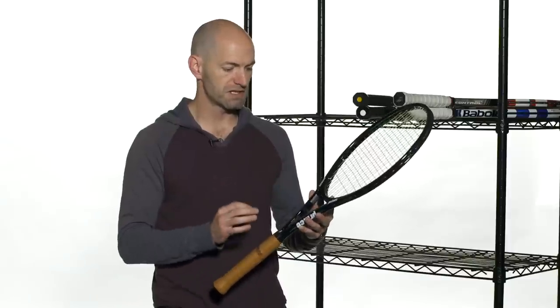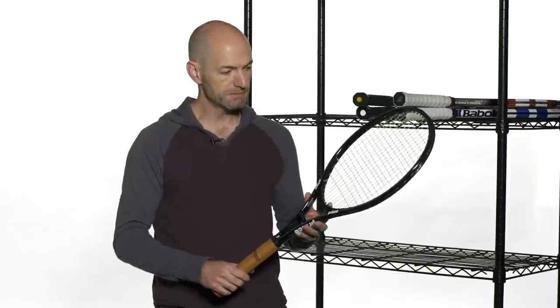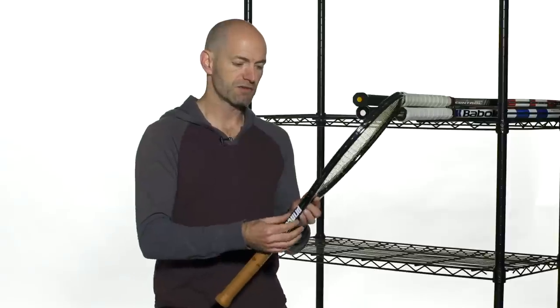One that's been around for a long time is the Prince 100 LB long body or the POG long body as it's also called. This one's 28 inches long. It's got a really nice straight beam. It's got a great flex to it. It's got a ton of feel. Excellent access to spin. I really like this racket out on the court.